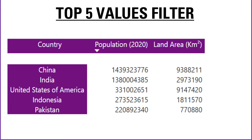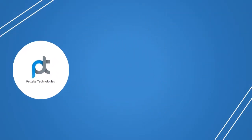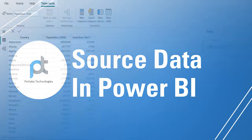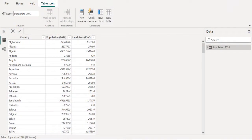Now let's see how to create a Matrix Visual in Power BI Desktop and filter top 5 values in it. Before creating the Matrix Visual, let's have a look at the source data. In source data, we have three columns: country, population, and land area.